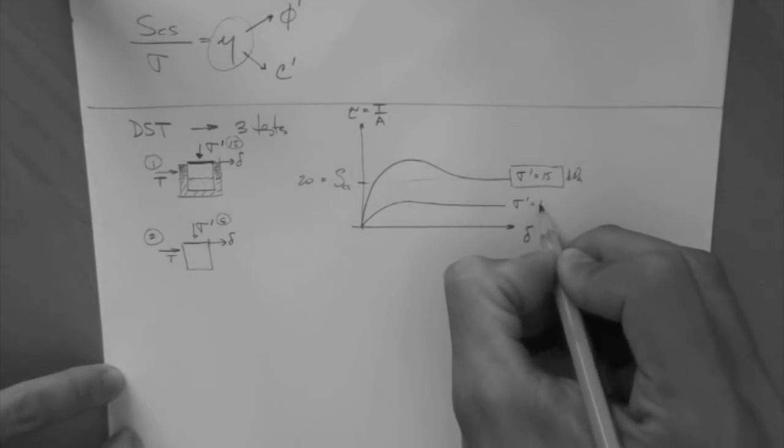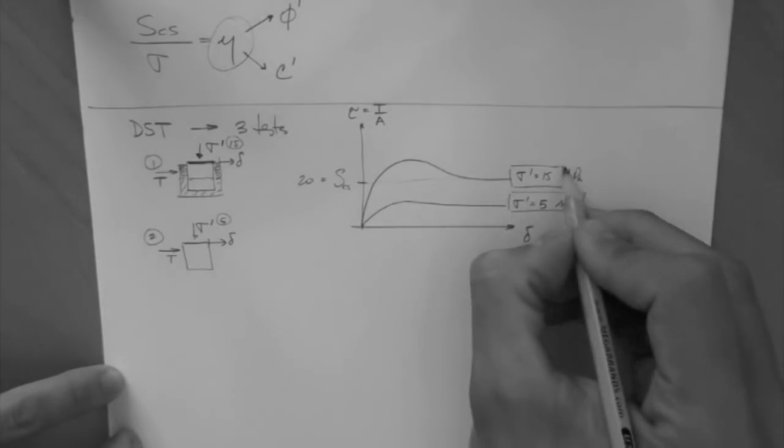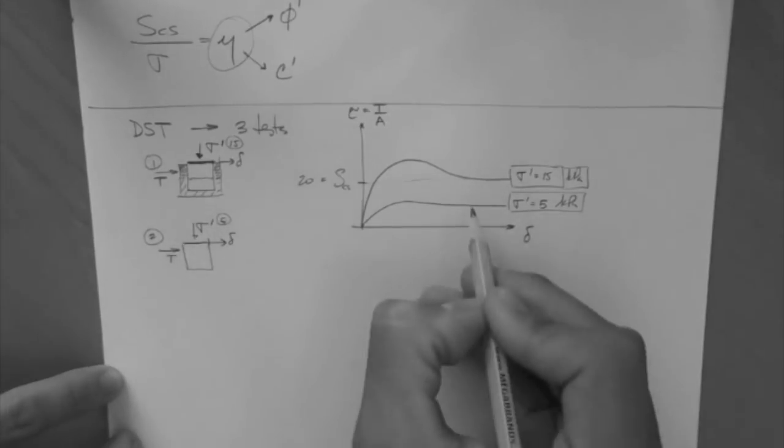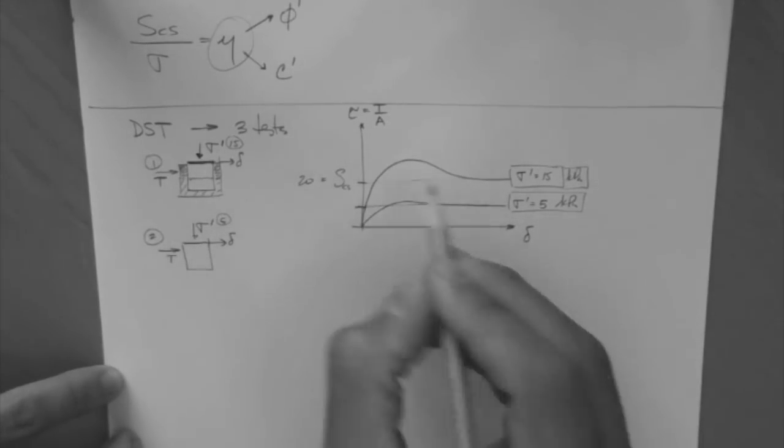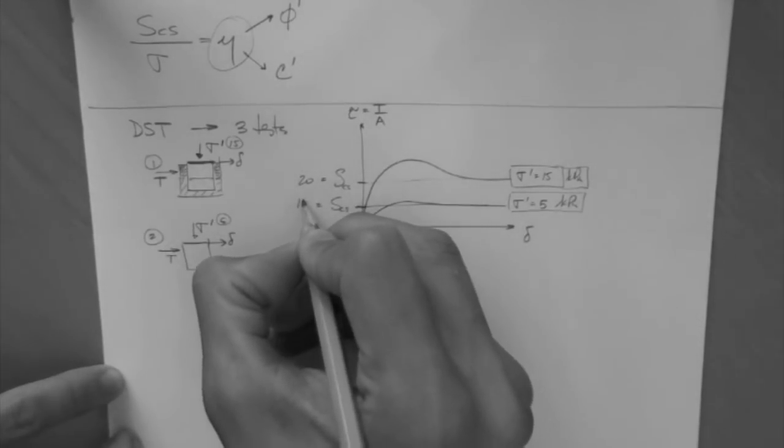So this is for an effective stress of 5 kPa. Same soil, of course. Critical state strength, in this case, let's say it's 15 kPa.